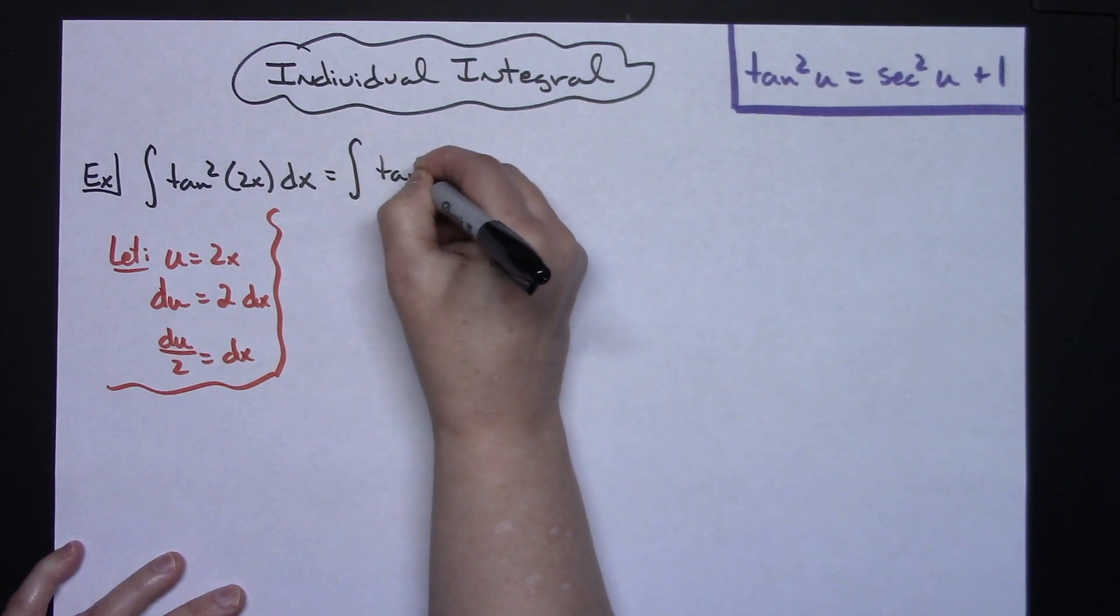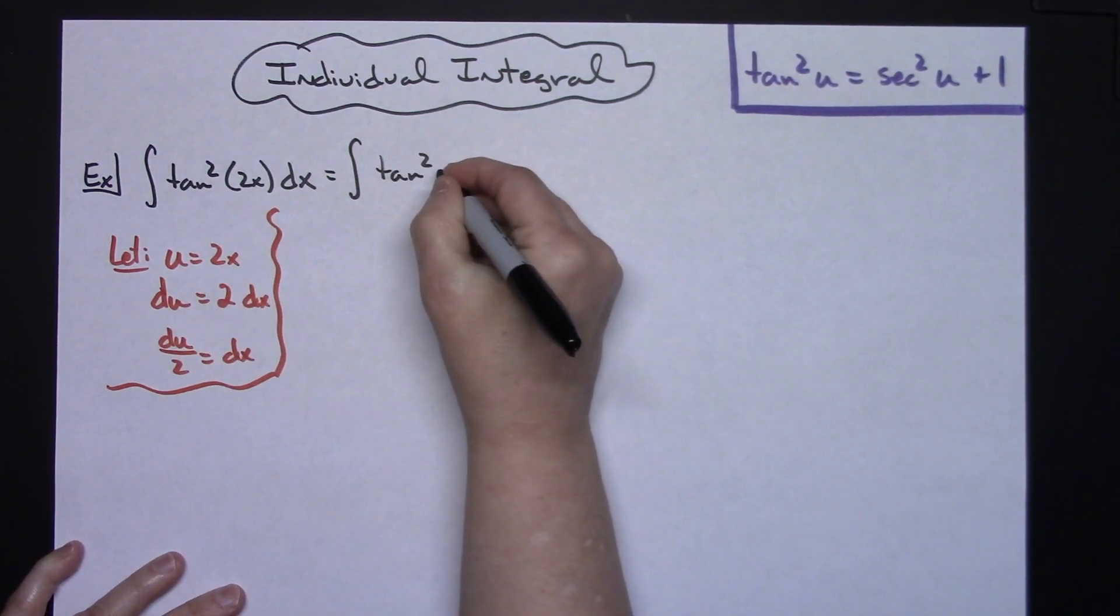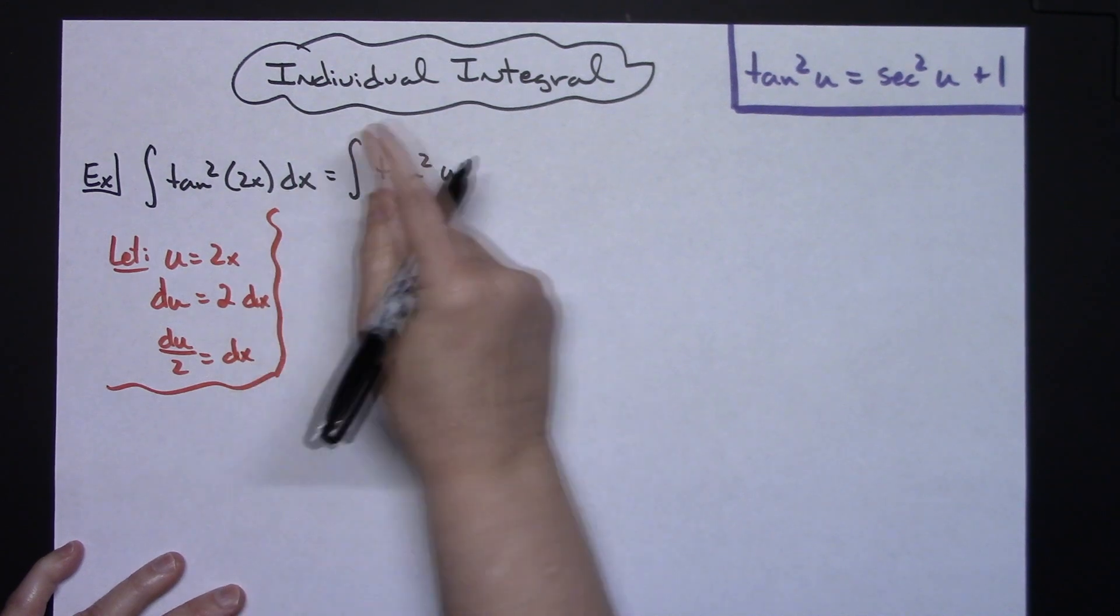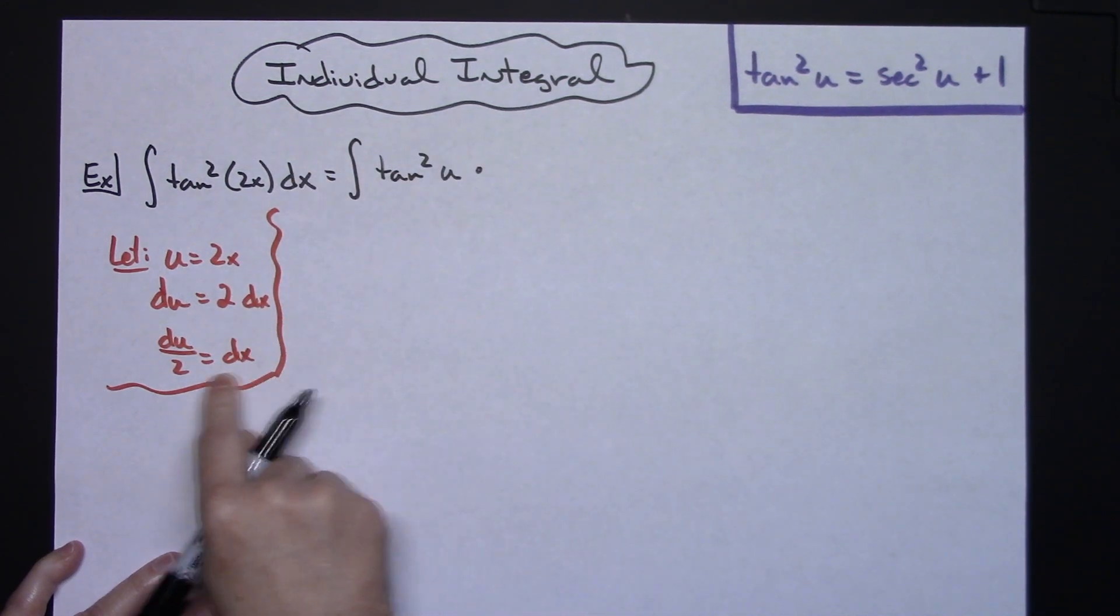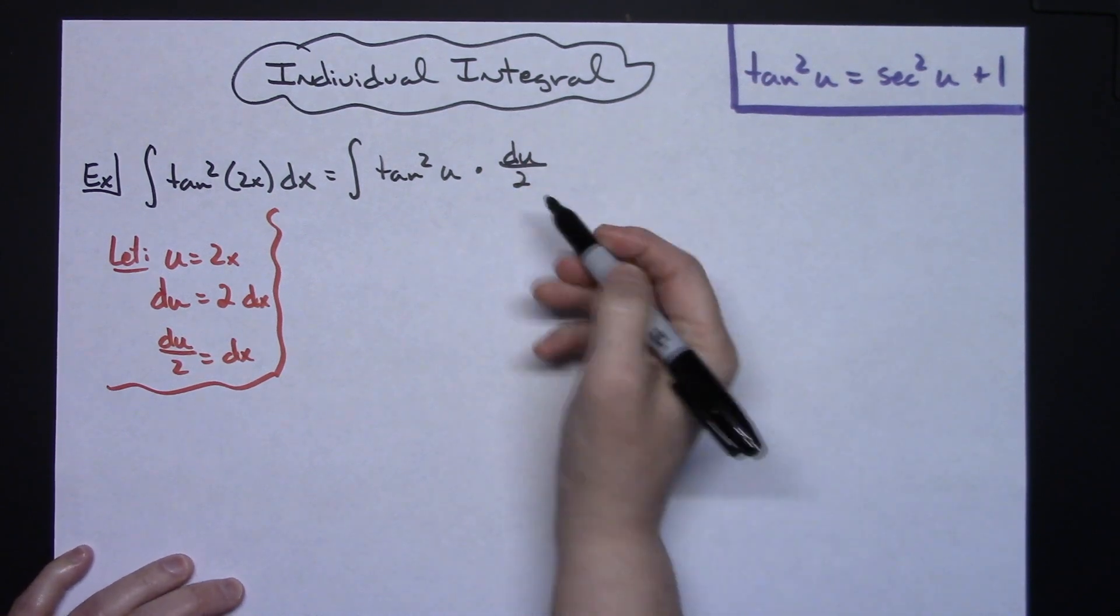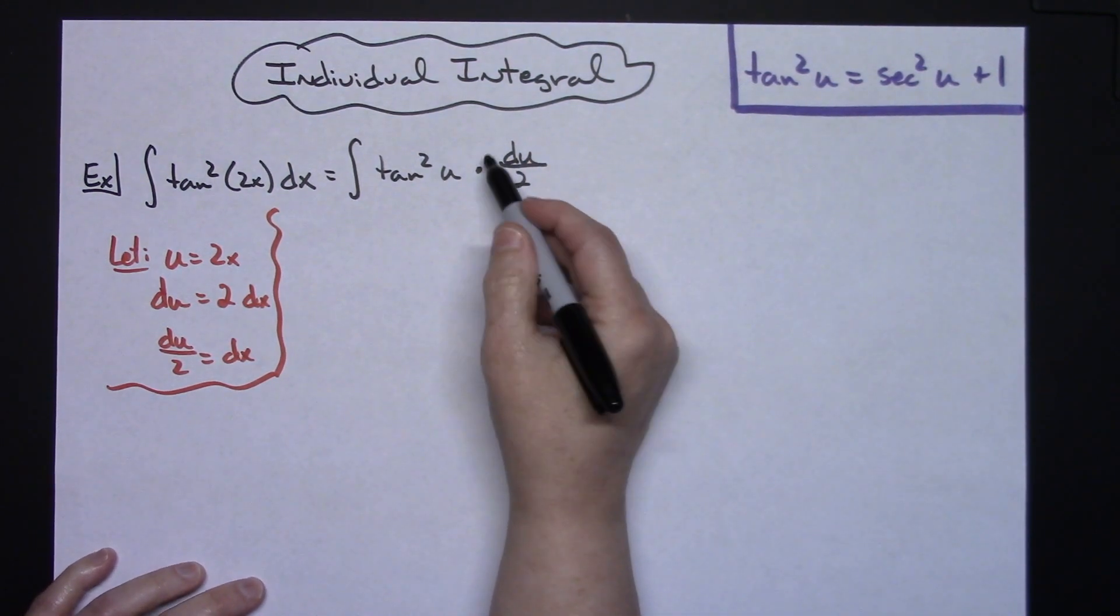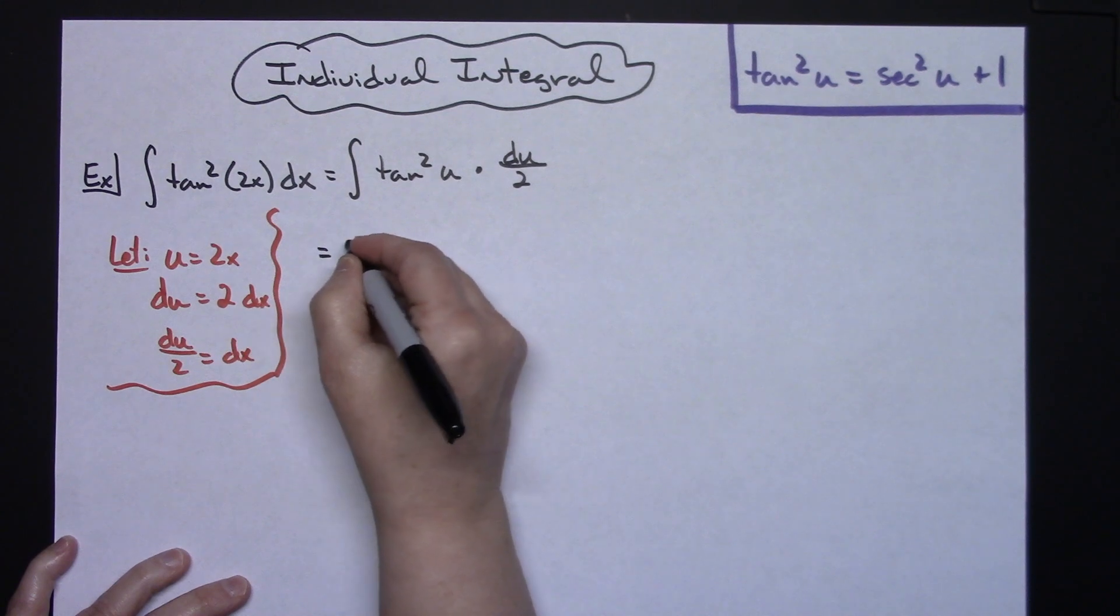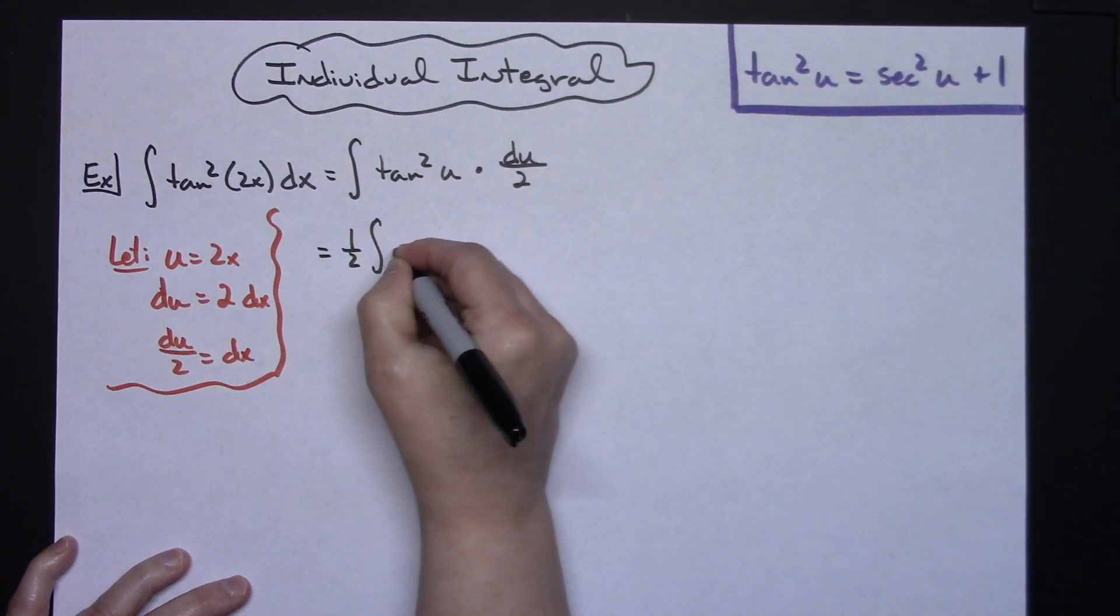The 2x I can replace with a u, and the dx then I can replace with du over 2. At that point right there, I can see that I can pull out a one-half, so I'm going to pull out that one-half in front of my integral. I'll have the tangent squared of u du.